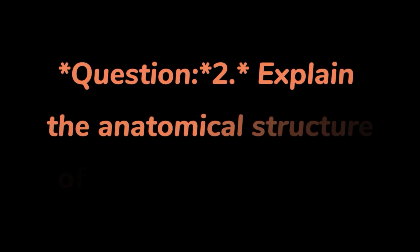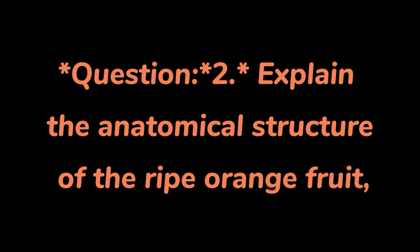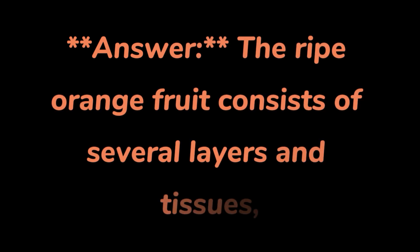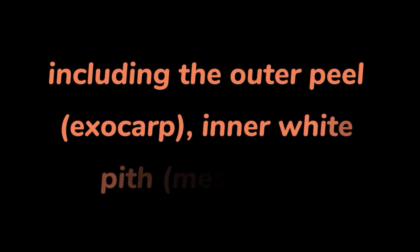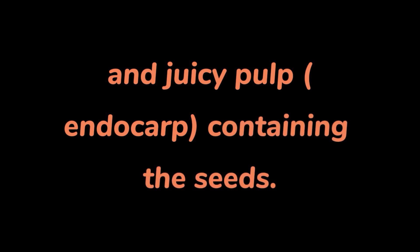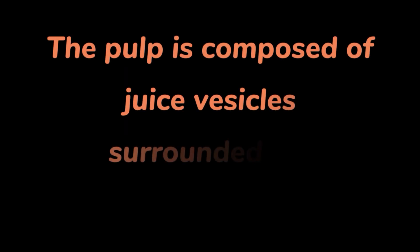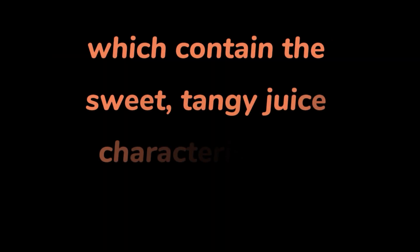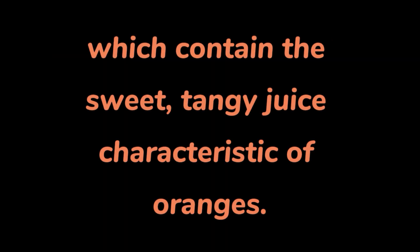Question 2: Explain the anatomical structure of the ripe orange fruit, including its various layers and tissues. Answer. The ripe orange fruit consists of several layers and tissues, including the outer peel (exocarp), inner white pith (mesocarp), and juicy pulp (endocarp) containing the seeds. The pulp is composed of juice vesicles surrounded by membranes, which contain the sweet, tangy juice characteristic of oranges.